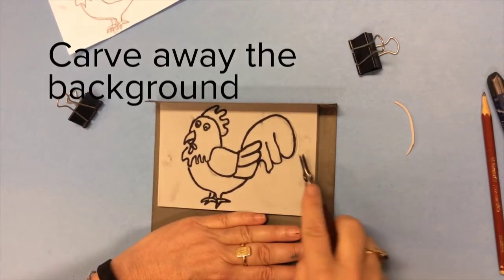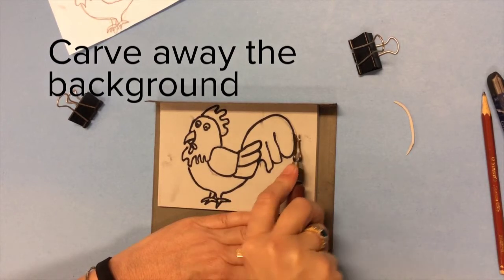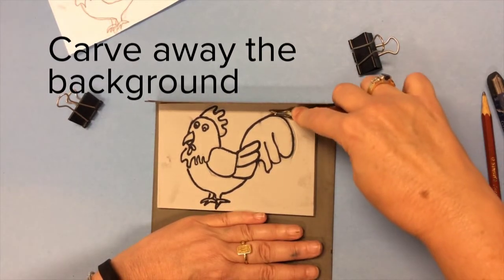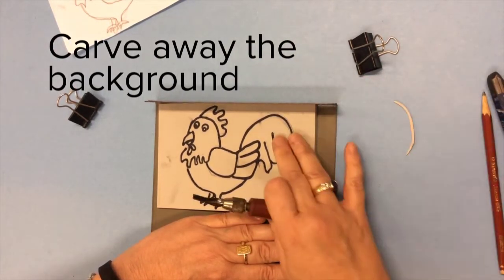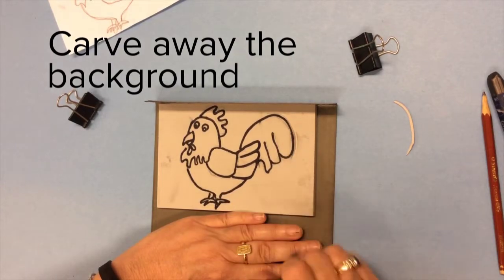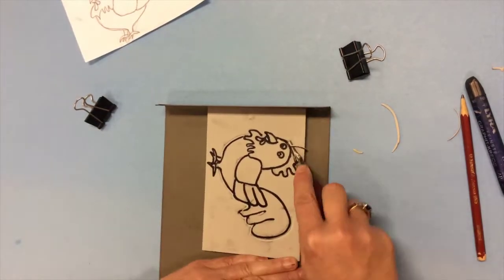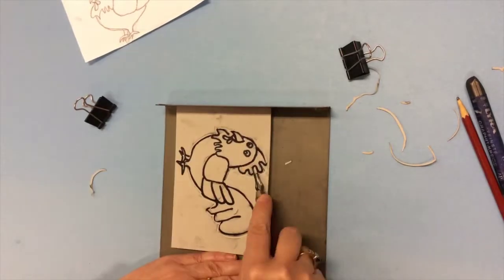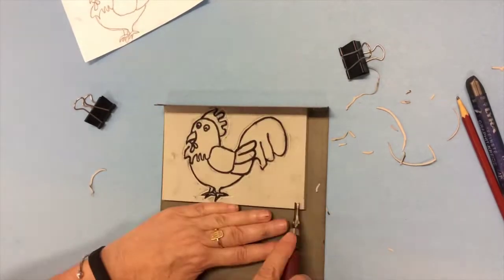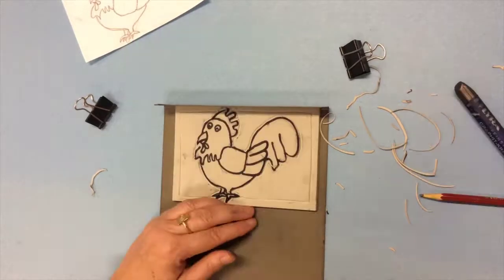Now it's time to start carving. Hold the block in place with one hand up against the edge of a bench hook. That will keep it from moving. Never carve towards your hand. These blades are sharp and it's important that you work safely. As I'm carving the background you might have noticed that I keep turning the block. That's so that I don't carve towards my hand. Remember these tools are sharp.